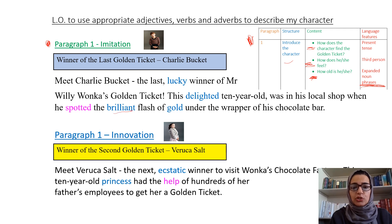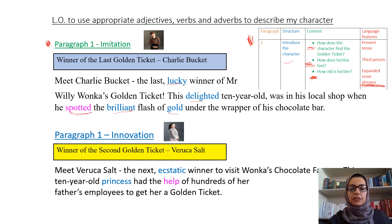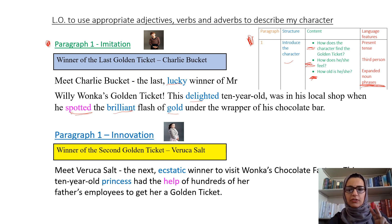You can see in blue we've got lots and lots of adjectives. In pink we've got a verb. There are no adverbs but that's fine — we're writing two paragraphs today so we can add an adverb in the second one.